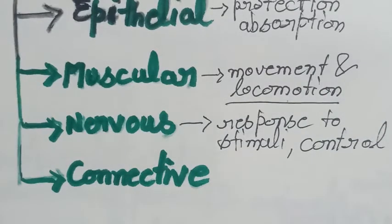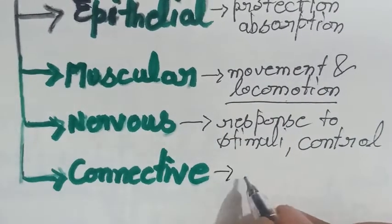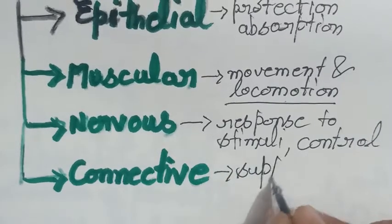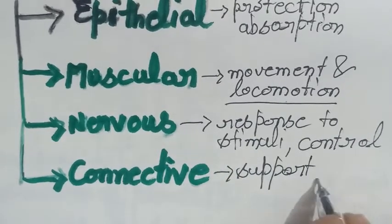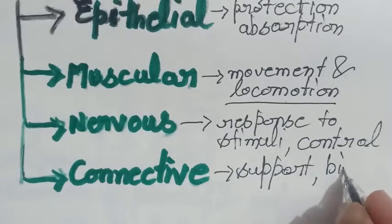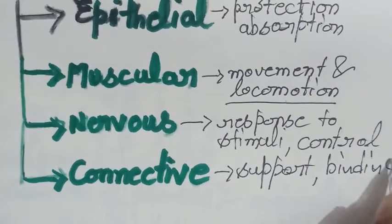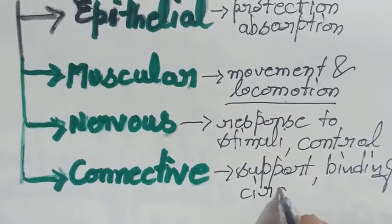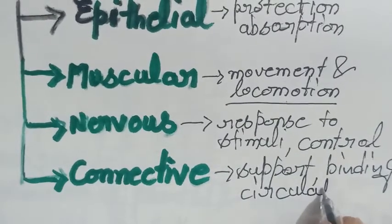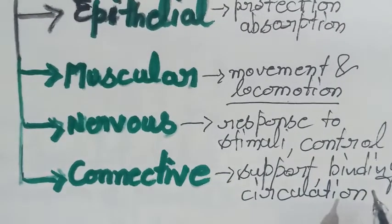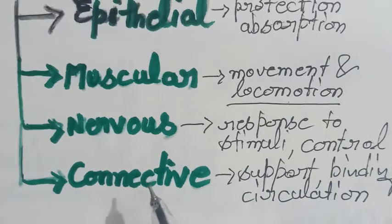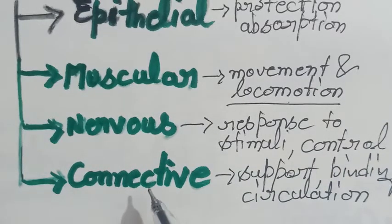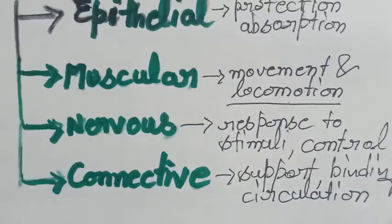The next one is connective tissues. Connective tissues, they provide support, they also bind two organ or two structure of our body, and help in circulation. So what circulate inside of our body? That is blood. So that is why blood is a type of connective tissue which connects our different body parts.